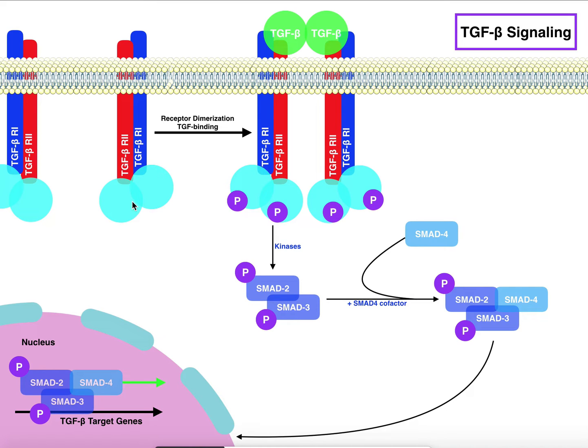In order to have TGF-beta signaling, you have to have TGF-beta, but these two receptor complexes, the one over here on the right and the one over here on the left, are going to have to come in closer proximity to one another. Right now they're pretty far apart. The way that they come in close proximity is when you actually have TGF-beta.